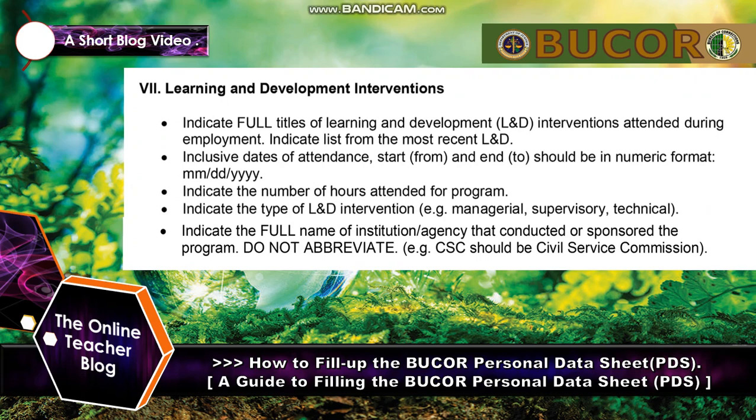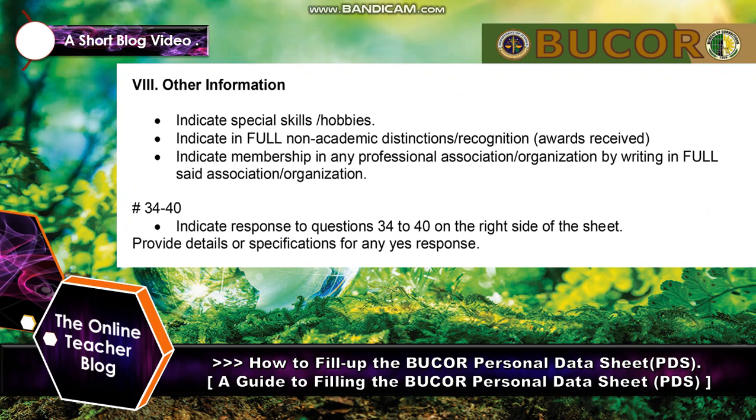Section 7 — Learning and Development (L&D) Interventions: indicate the full title of L&D interventions attended during employment. List from the most recent. Inclusive dates of attendance should be in numeric format — month, day, and year. Indicate the number of hours attended for each program. Indicate the type of L&D intervention — for example: managerial, supervisory, or technical. Indicate the full name of the institution or agency that conducted or sponsored the program — do not abbreviate. For example, 'CSE' should be written as 'Civil Service Commission.'